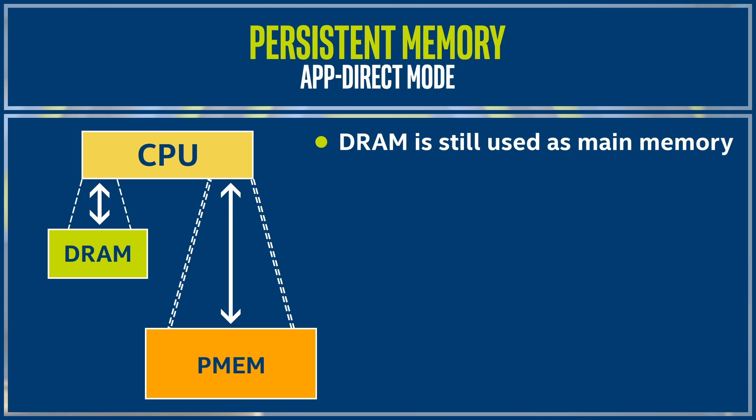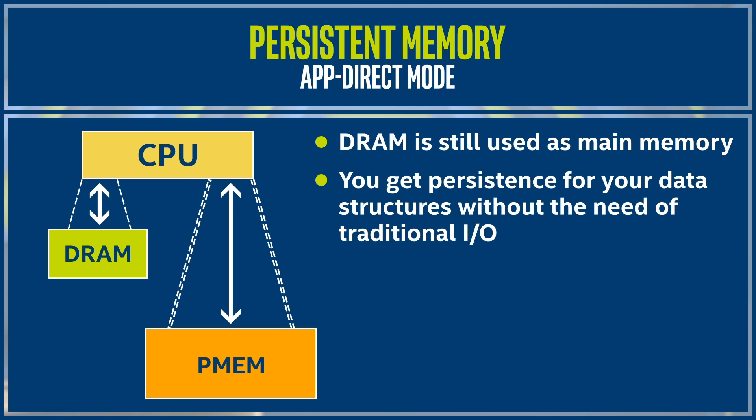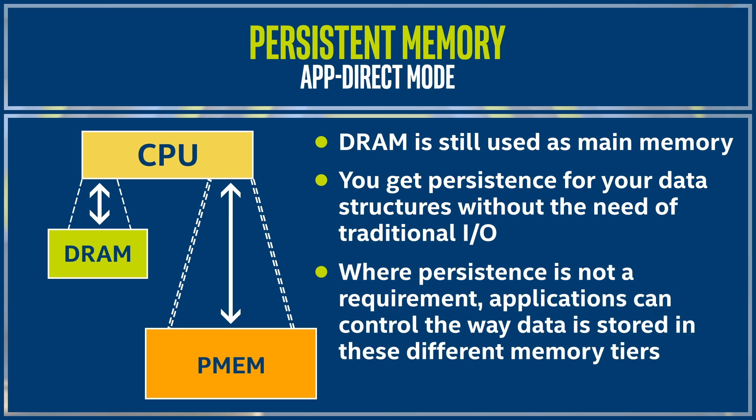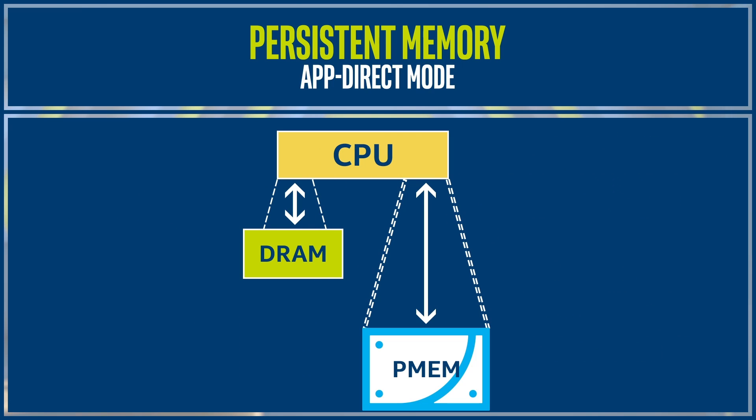The advantages for applications in AppDirect mode are twofold. First, you get persistence for your data structures without the need for traditional I/O. Second, and in cases where persistence is not a requirement, applications can control the way data is stored across different memory tiers. For example, you can put so-called hot objects — those used the most — in DRAM, while leaving warm objects for persistent memory. You can also use persistent memory in AppDirect as a regular block device with a regular file system, as if it were an SSD. It is even possible to boot an operating system from it, allowing you to configure systems with no disks at all.